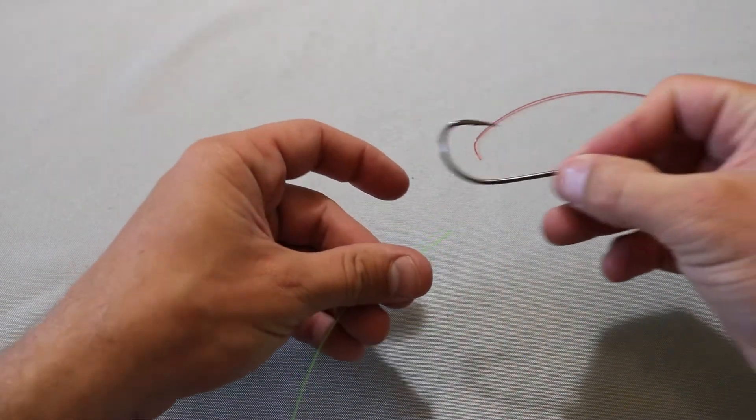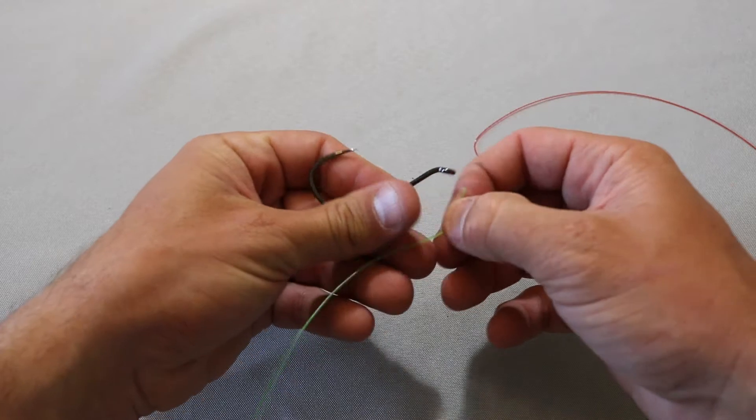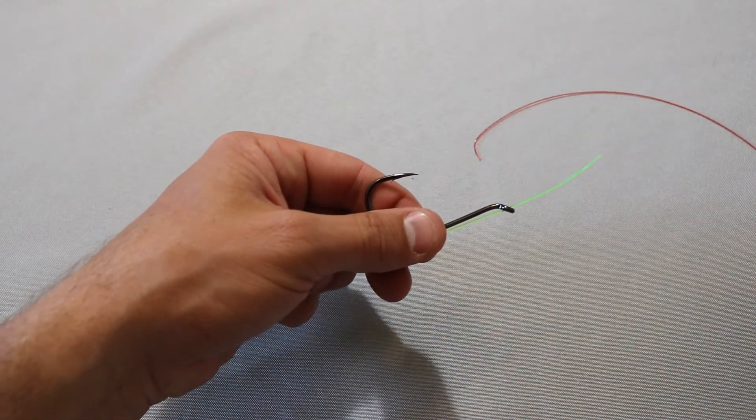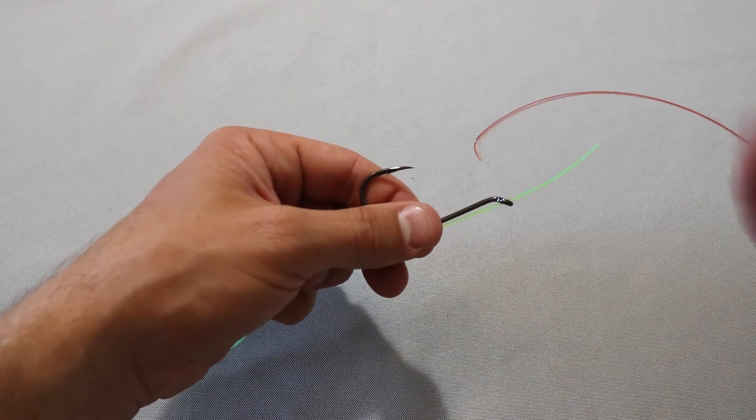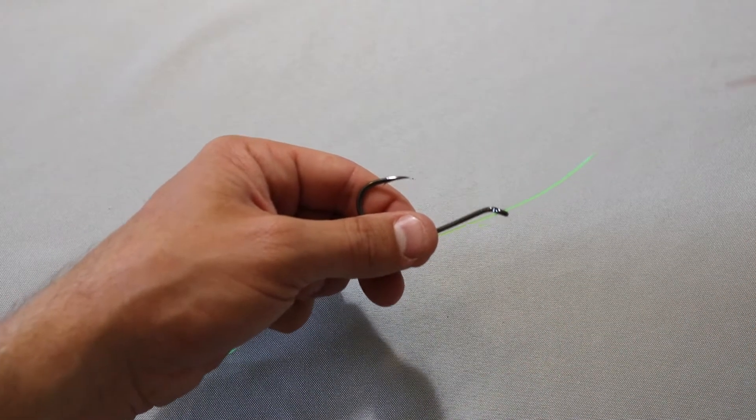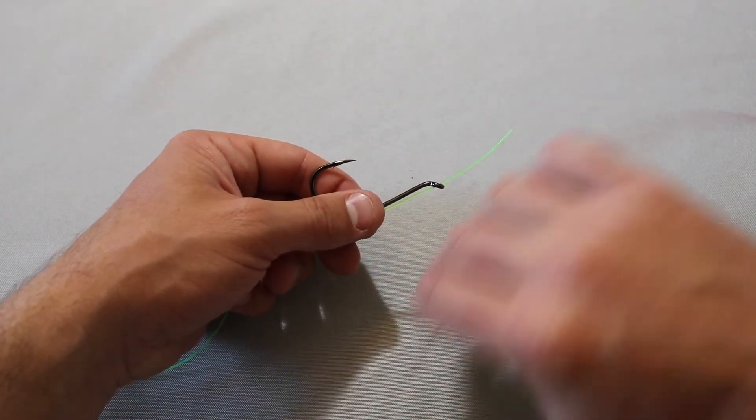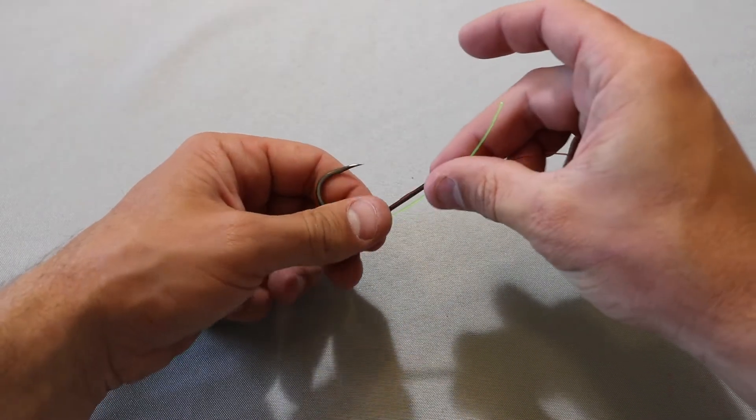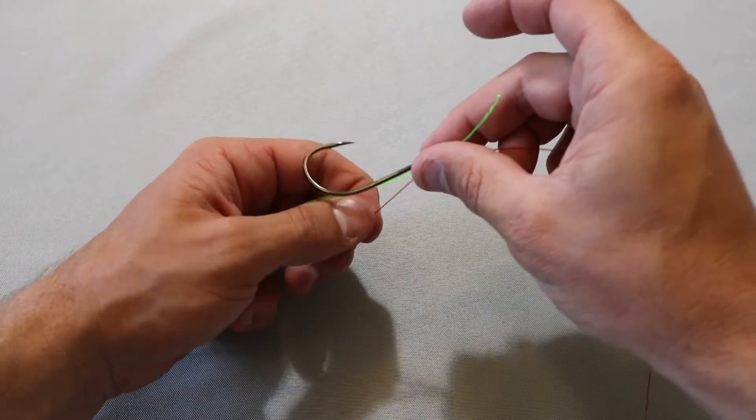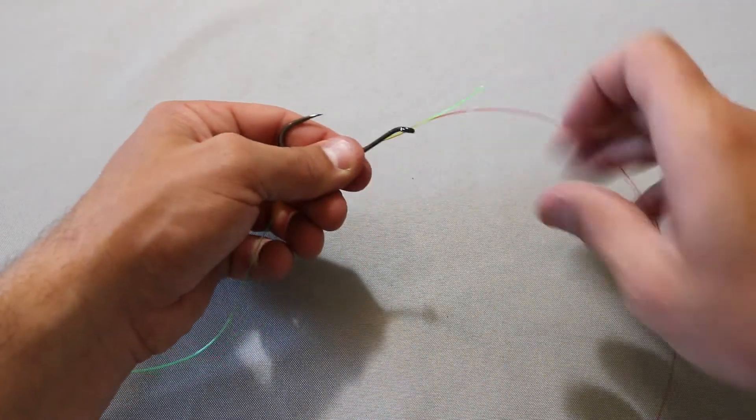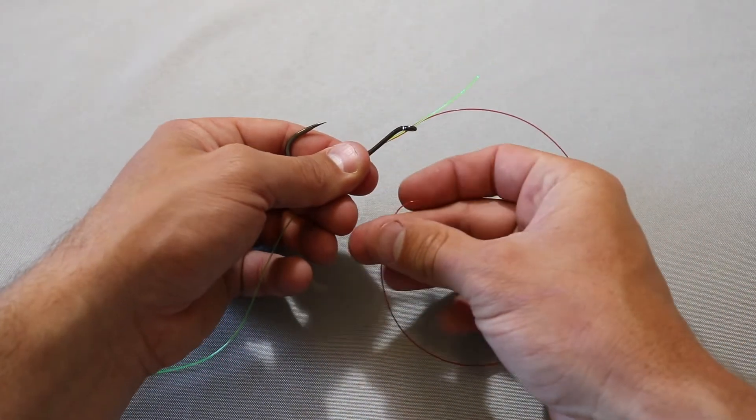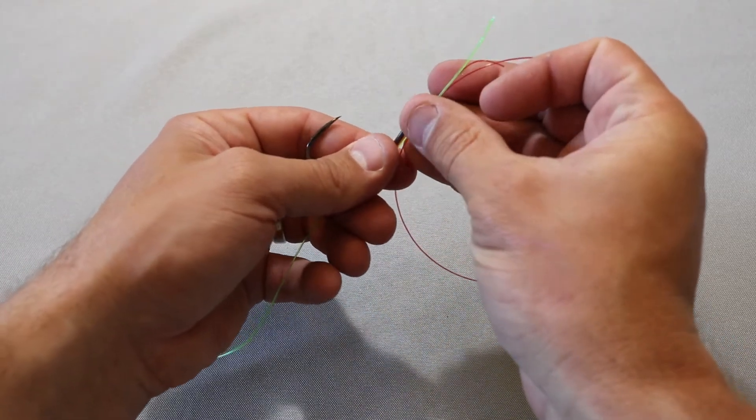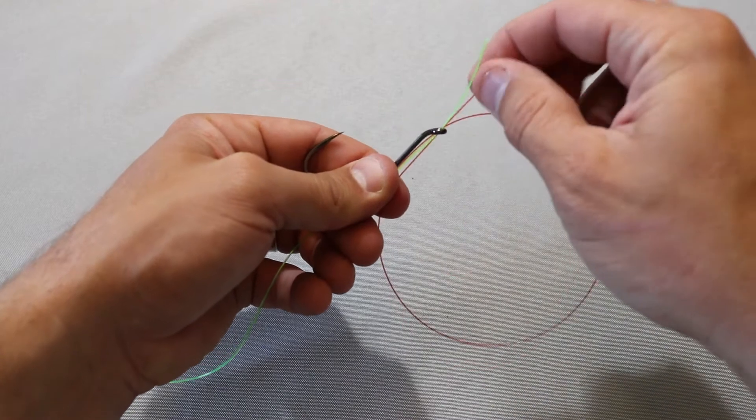For the adjustable snell knot, you're going to take your octopus hook, making sure you're coming up from the bottom there. Then you're going to take a secondary piece of line about 12 inches in length and feed it down through the eye of the hook. You're going to loop that 12-inch piece of line and come up through the eye of the hook, and then you're only going to go about an inch above it.